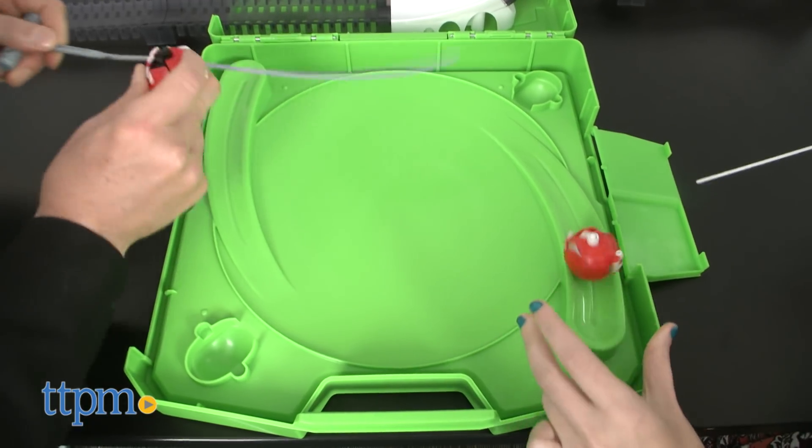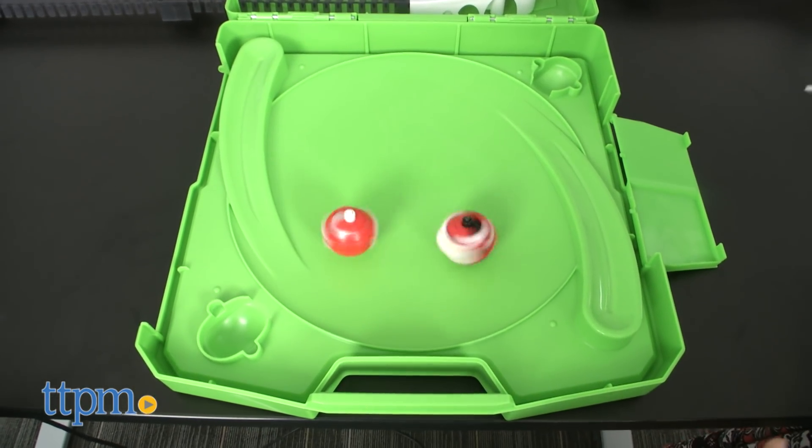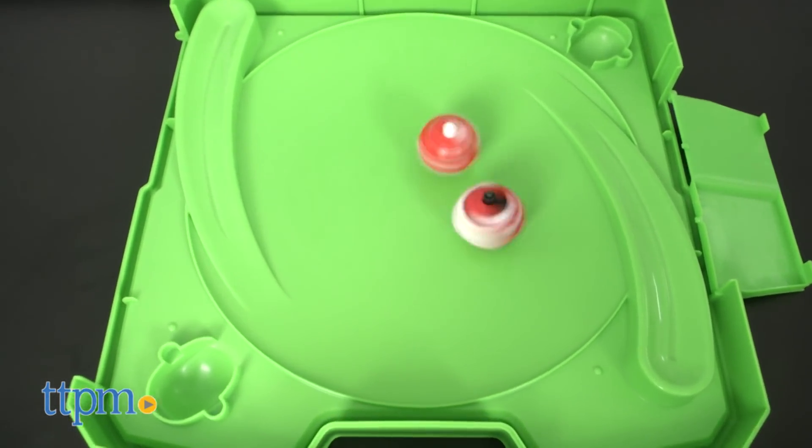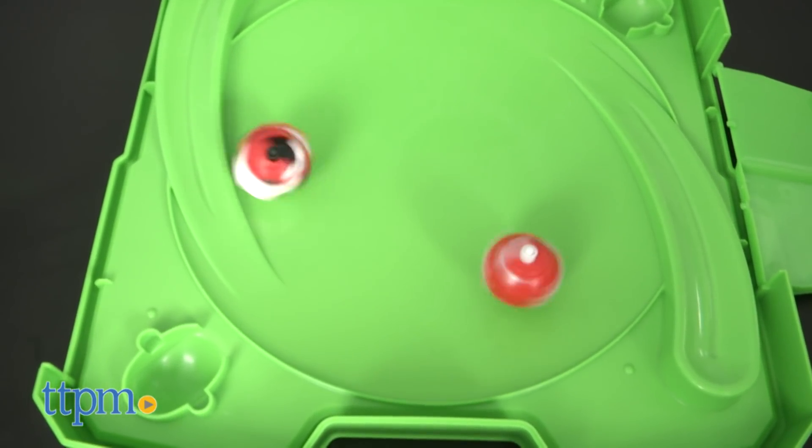To play in battle mode, rev up your Power Ripper and let it go in the side of the case shaped like the arena. Last Power Ripper standing is the winner.